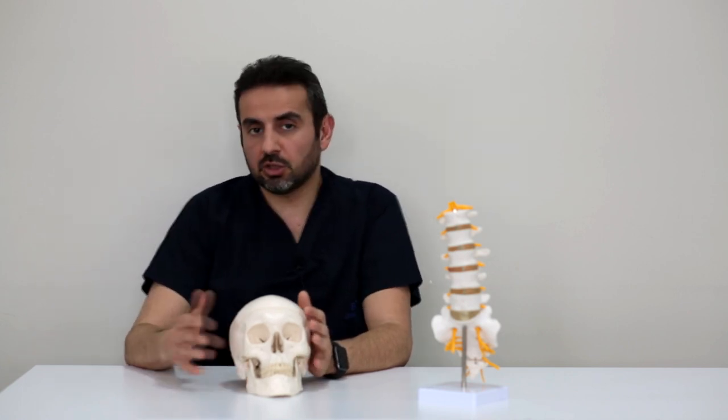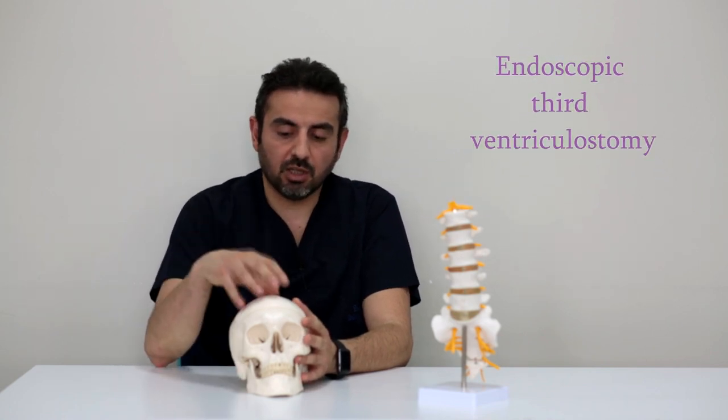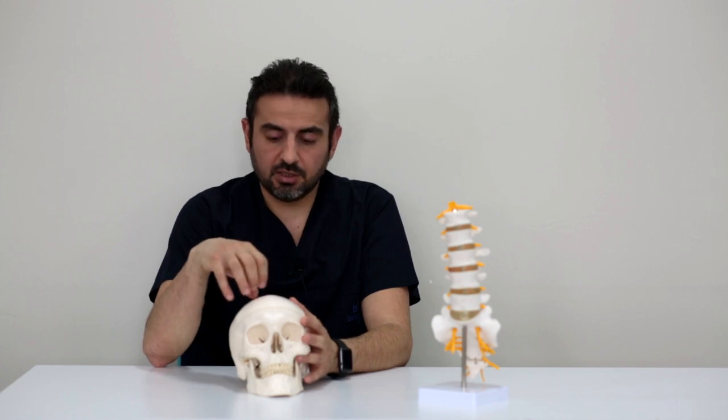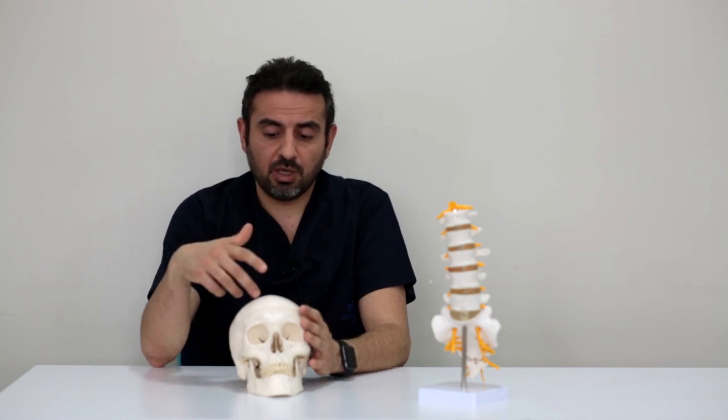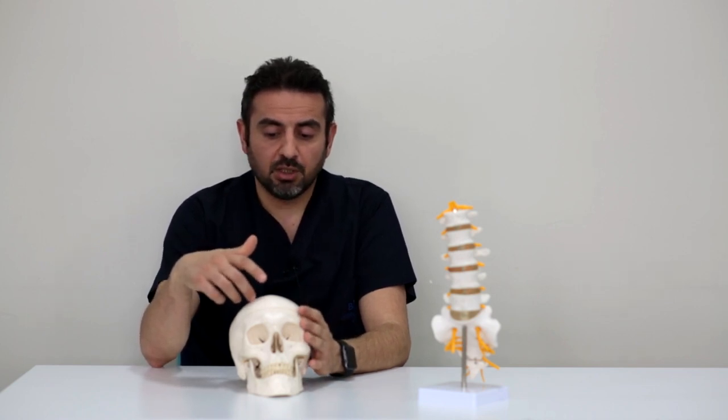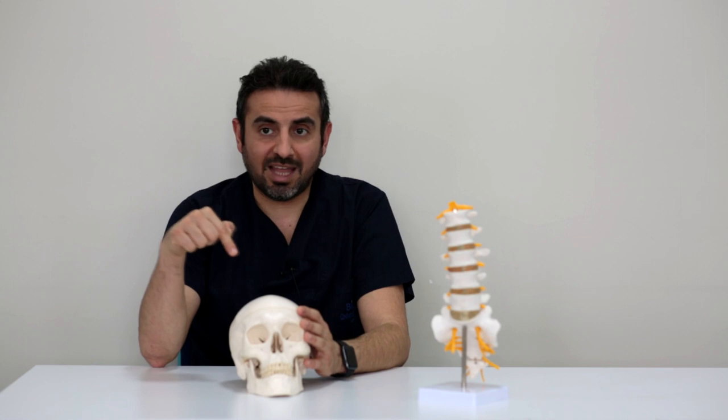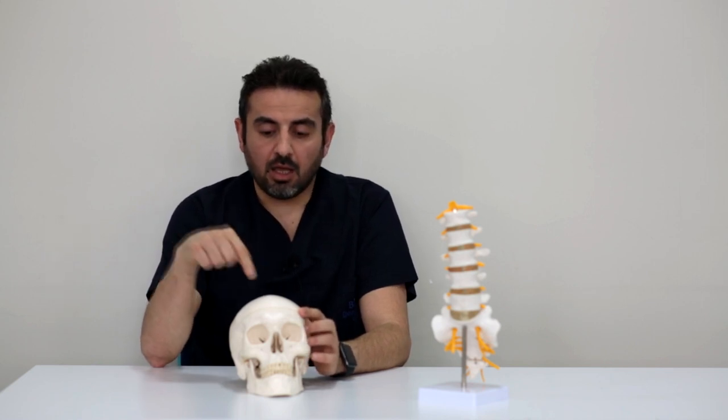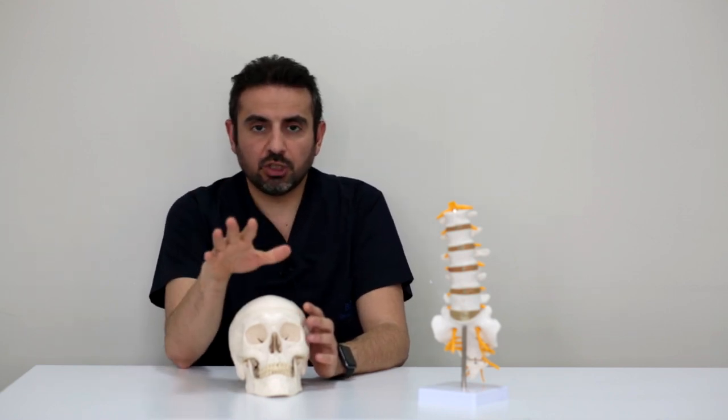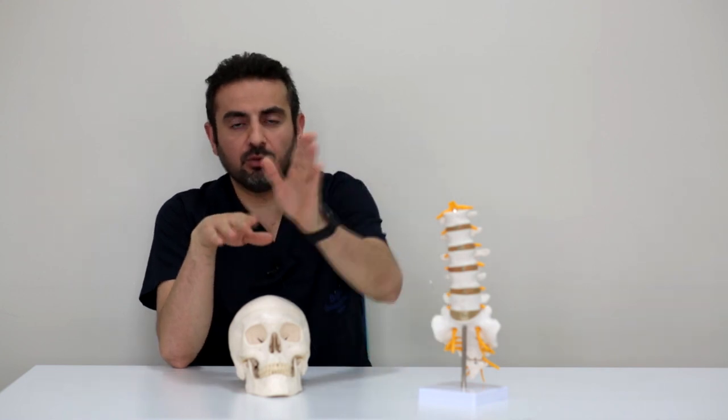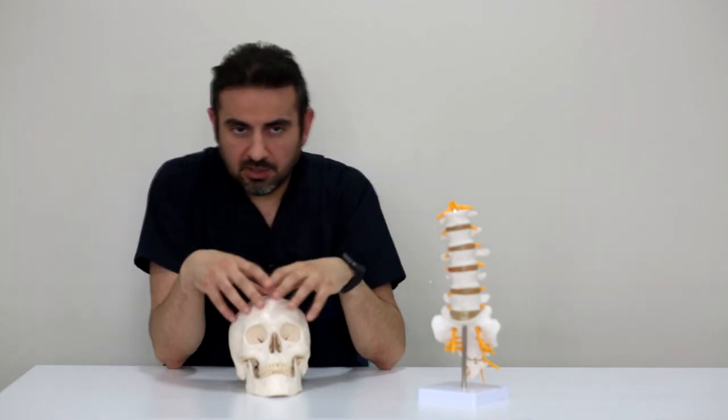For that reason, we have an alternative technique: endoscopic third ventriculostomy, which allows us in some cases, not all cases, to avoid shunting. With endoscopic third ventriculostomy, we basically make a small hole in the skull and then go inside the ventricular cavity with an endoscope. Within the ventricular cavity, we open up an alternative window for the cerebrospinal fluid to come out from the brain.